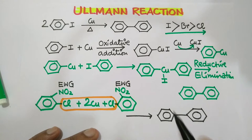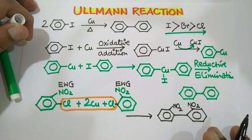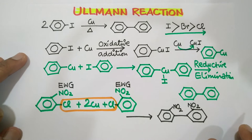Nitro group is EWG, but if instead of nitro there is OH or OMe group, any EDG electron donating group, it won't work well.